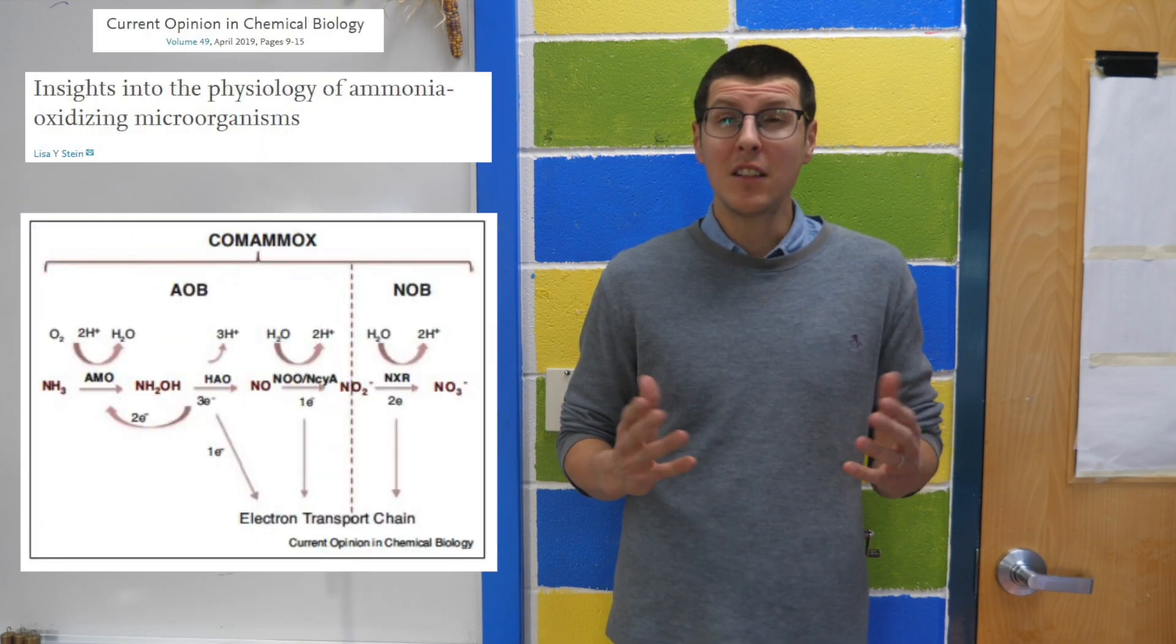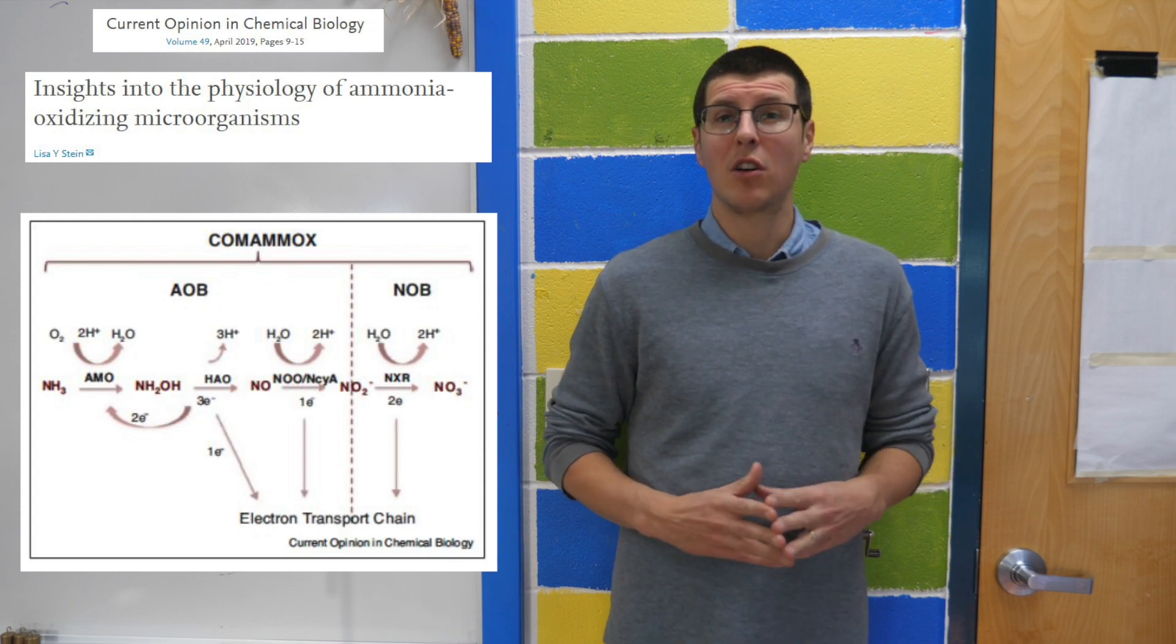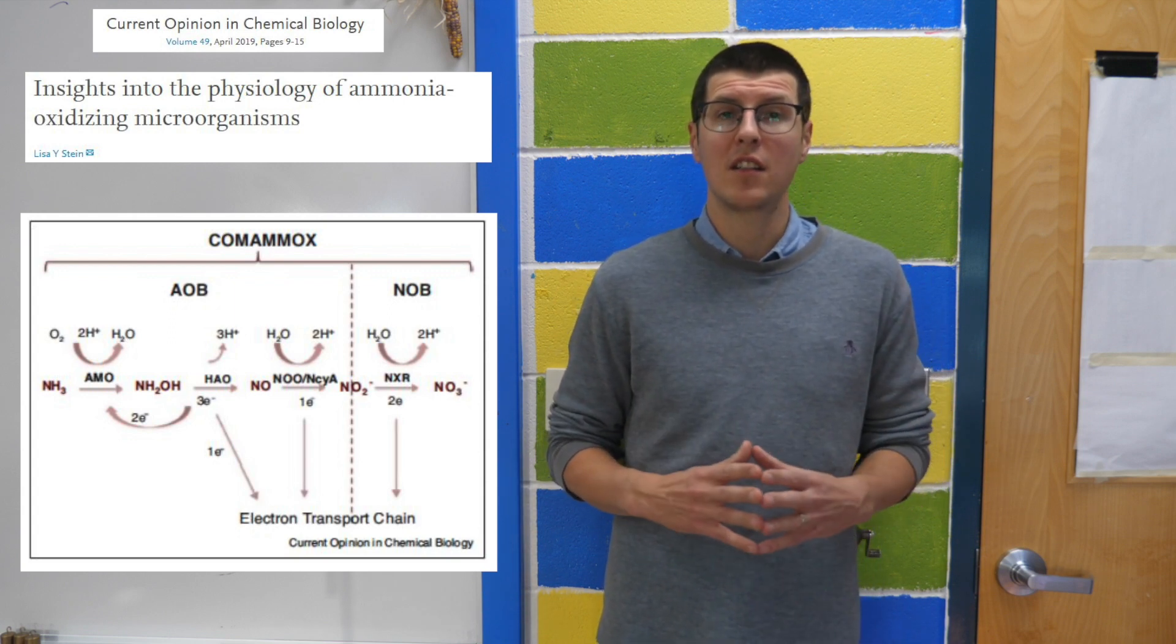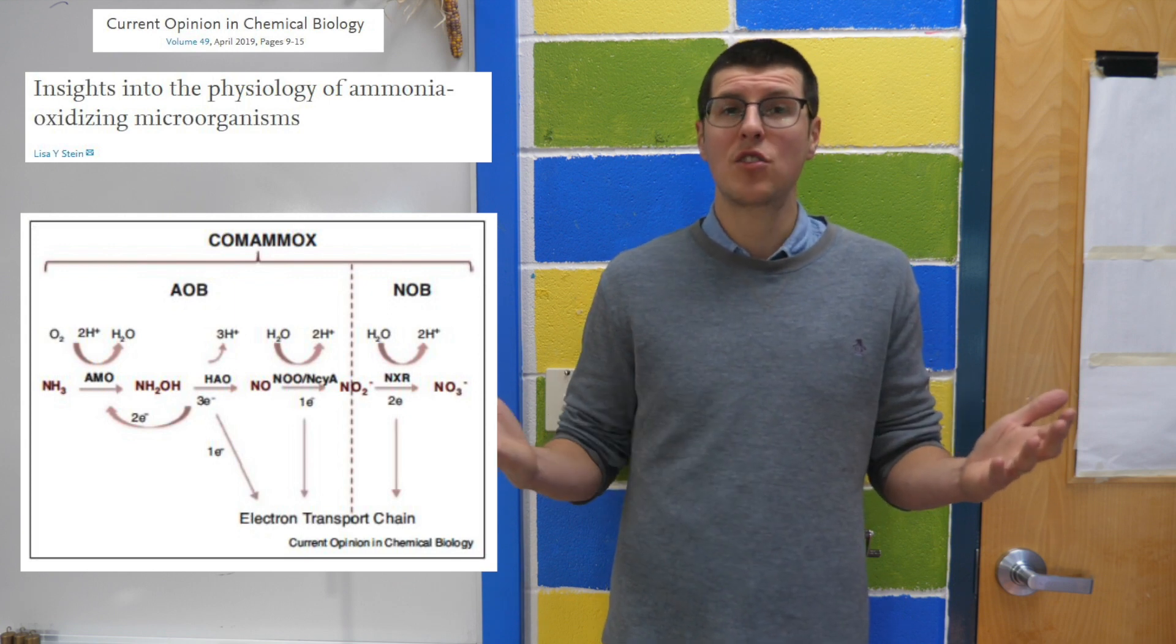Dr. Lisa Stein from the University of Alberta is a microbiologist, and I actually had the opportunity to listen to her talk about some of her work a little over a year ago. Basically, there are three families of microbes that are important in an aquaponic system. First, there are the ammonia oxidizers. These oxidize the fish waste to nitrite.